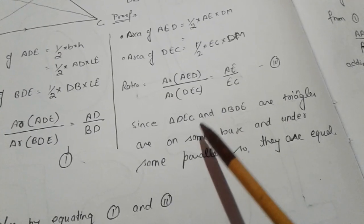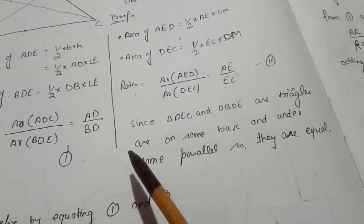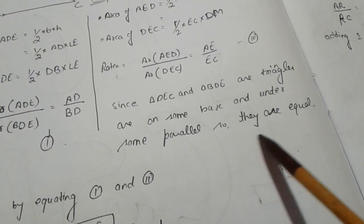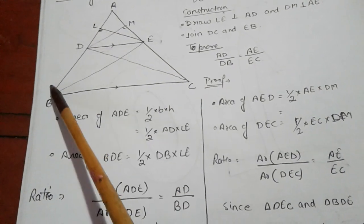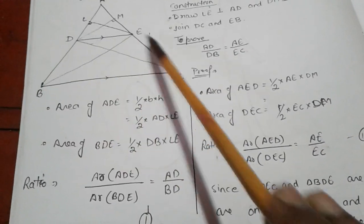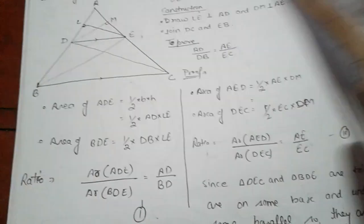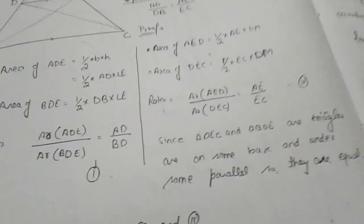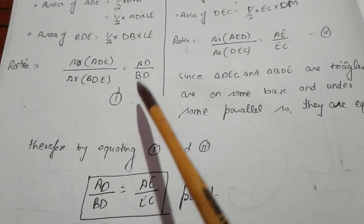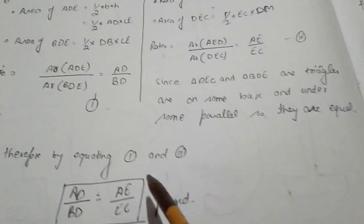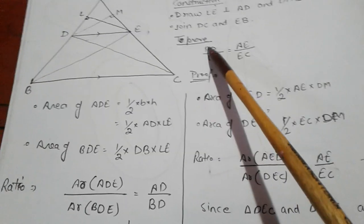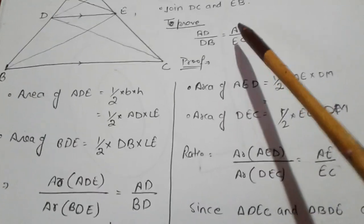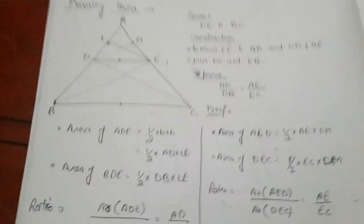Since triangles DEC and BDE lie on the same base DE and between the same parallels, their areas are equal. Therefore, by equating equation one and equation two, we get AD upon DB is equal to AE upon EC — which is exactly what we were supposed to prove. So we have proved the Basic Proportionality Theorem. It is a very easy theorem and you will get many questions based on it in your board exams.